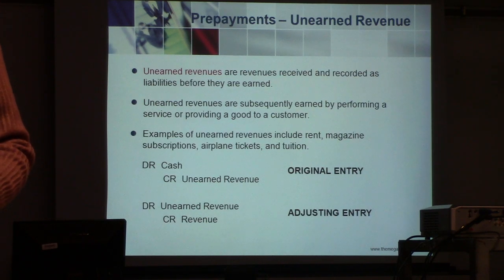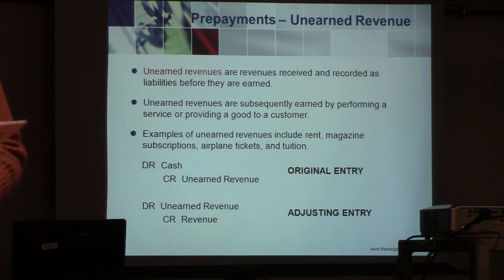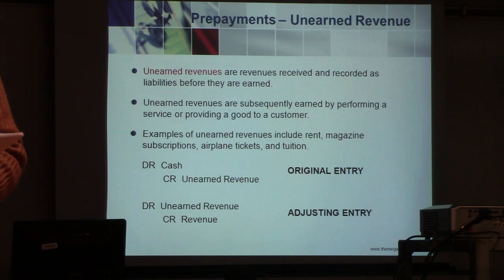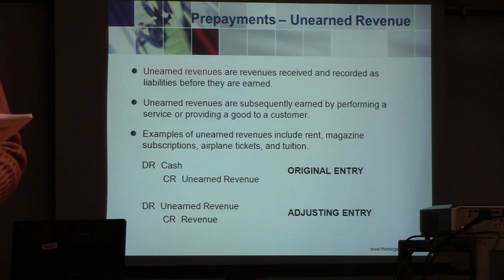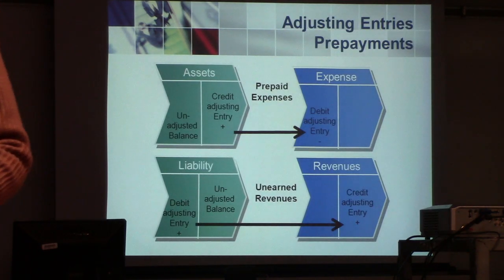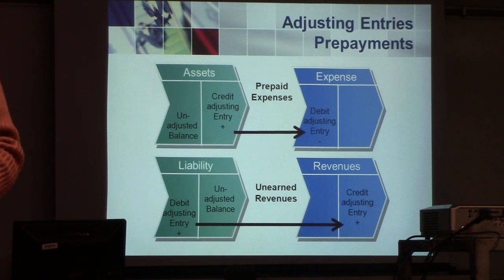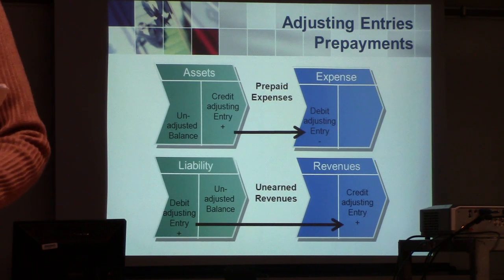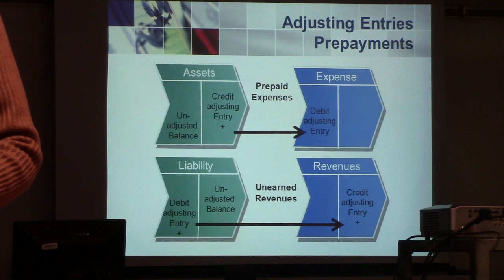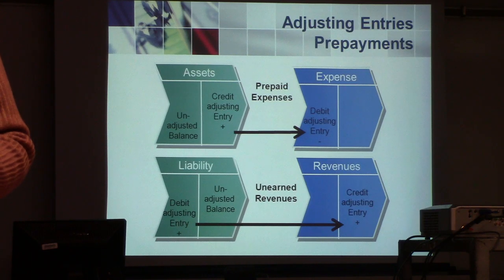Accrued revenues and accrued expenses are things we deal with regularly — generally, accounts receivable and accounts payable. These are basically your accrued revenues and expenses. And amortization is the allocation of the cost of long-term assets to expenses over their useful lives, which we'll talk about more throughout the course.